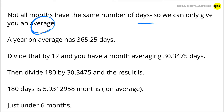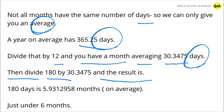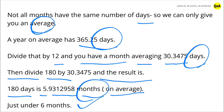A year on average has 365.25 days. Divide that by 12 and you have a month averaging 30.3475 days. Then divide 180 by 30.3475 and the result is 5.9312958 months on average — just under 6 months.